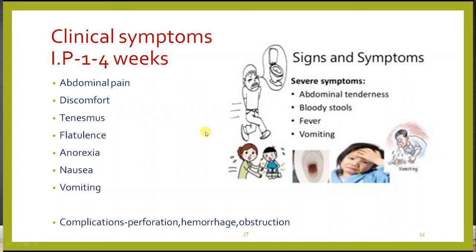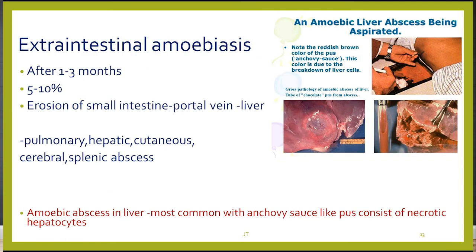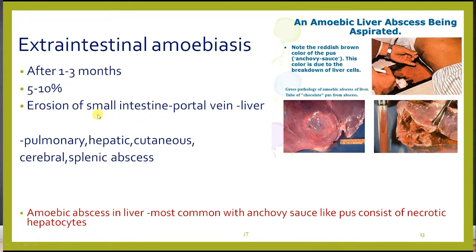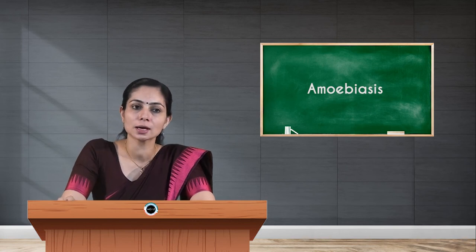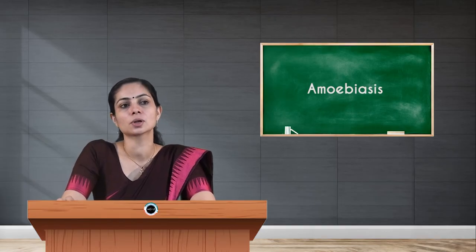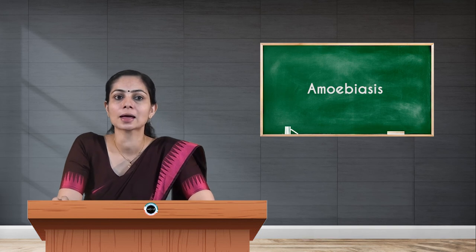Clinical symptoms usually start one to four weeks after ingestion, including abdominal pain, discomfort, tenesmus, flatulence, anorexia, nausea, and vomiting. Complications include perforation, hemorrhage, and obstruction. Extra-intestinal amoebiasis occurs in 5 to 10 percent of patients after one to three months of intestinal amoebiasis. The parasite erodes the small intestine, enters the portal vein, and mainly reaches the liver. Other sites include the pulmonary region, cutaneous, cerebral, and splenic areas.